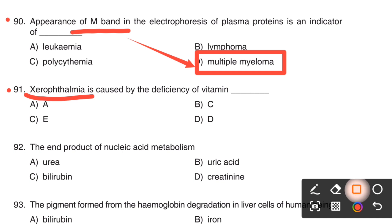Always vitamin A deficiency is associated with ophthalmic disorders. So the right answer is Option A, Vitamin A.